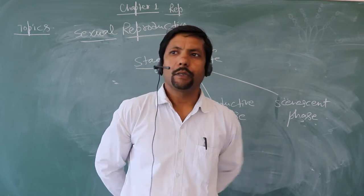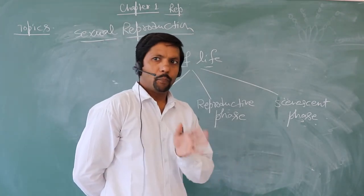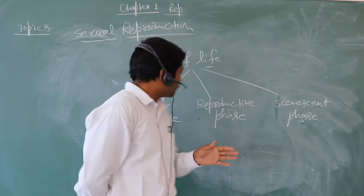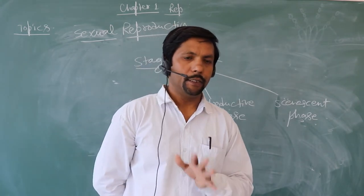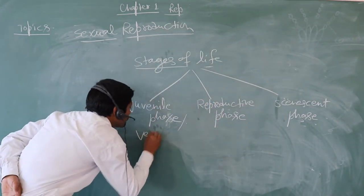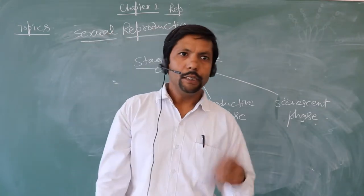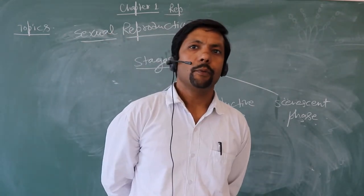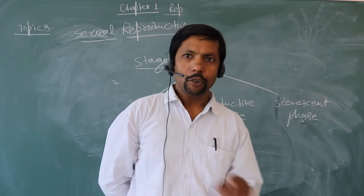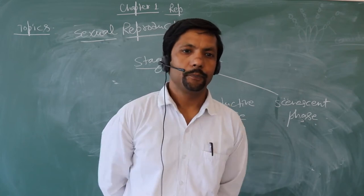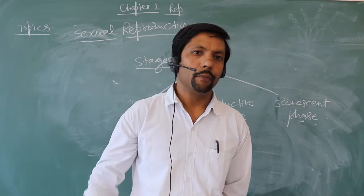The first phase, the juvenile phase, can be called the vegetative phase in the case of plants. Vegetative phase means where root, stem, and leaves develop in the plant. So the vegetative phase is the growth phase in which the plant develops its root, stem, and leaves. After that, the flower comes in the plant, and this is the indication of maturity of a plant.